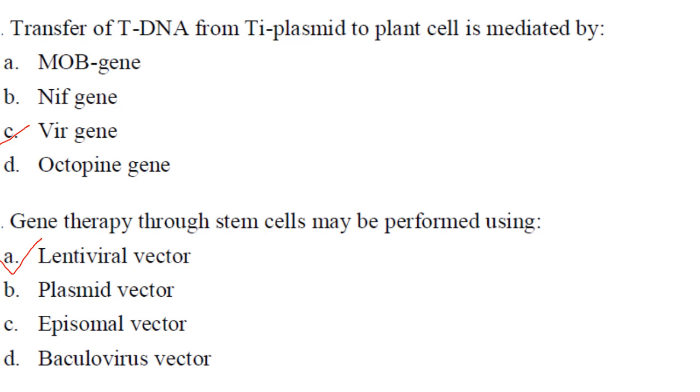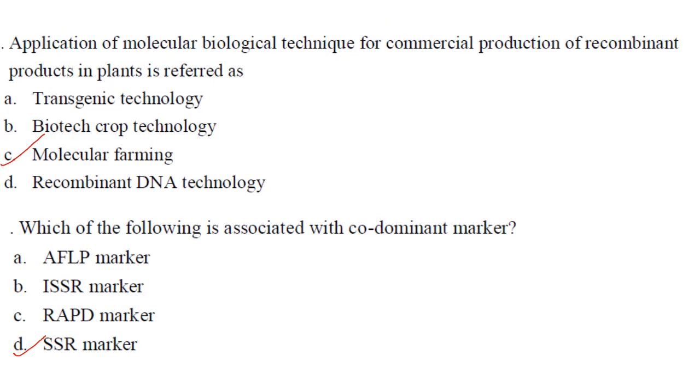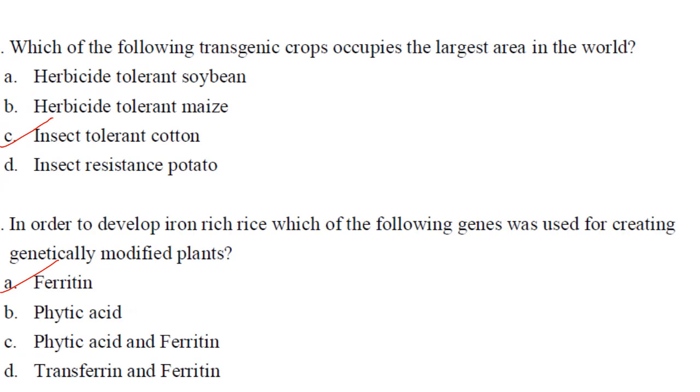Gene therapy through stem cells can be performed using lentiviral vectors. Answer is A. Application of molecular biological technique for commercial production of recombinant products in plant is referred to as molecular farming. Answer is C. Which of the following is associated with co-dominant marker? It is SSR marker, a co-dominant marker, whereas all the other three - AFLP, ISSR, RAPD - are dominant markers. Which of the following transgenic crop occupies the largest area in the world? It is insect tolerant cotton. In order to develop iron rich rice, which of the following genes was used for creating genetically modified plants? For iron rich rice you have to use ferritin. Answer is option A.